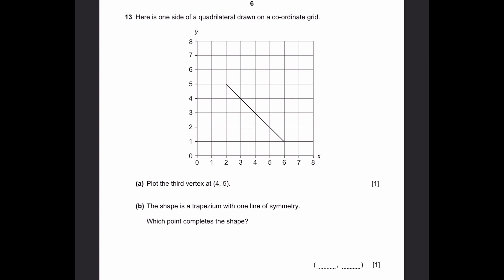Question 13. Here's one side of a quadrilateral drawn on a coordinate grid. Part A: Plot the third vertex at 4,5. So 4,5 is going to be x is 4, y is 5. It's here. That's the answer.